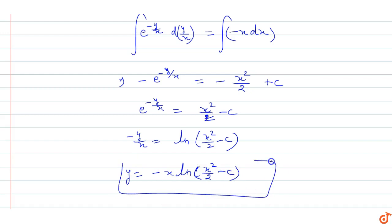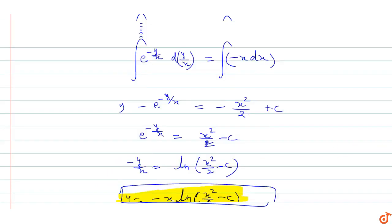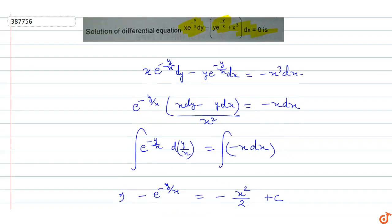Therefore, y equals minus x times ln(x squared by 2 minus c). This is the solution of the differential equation x·e^(-y/x) dy minus y·e^(-y/x) dx plus x cubed dx equals zero.